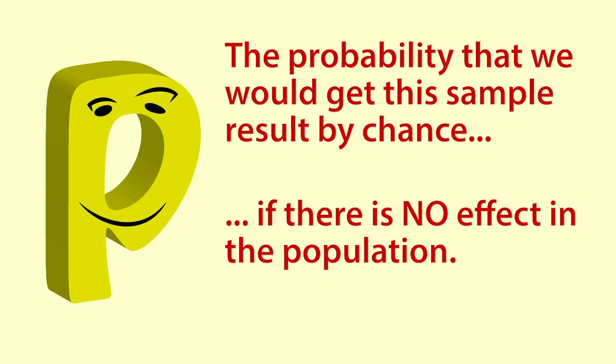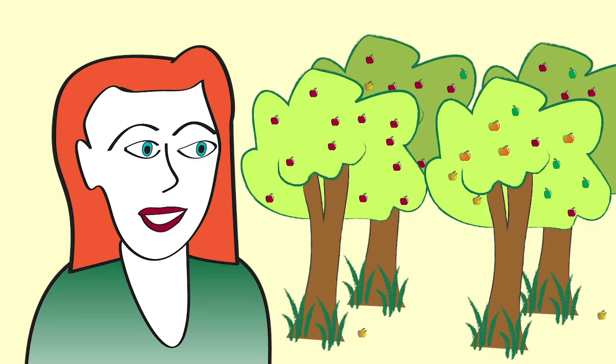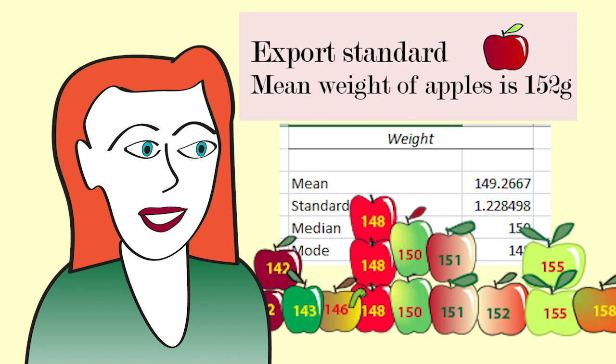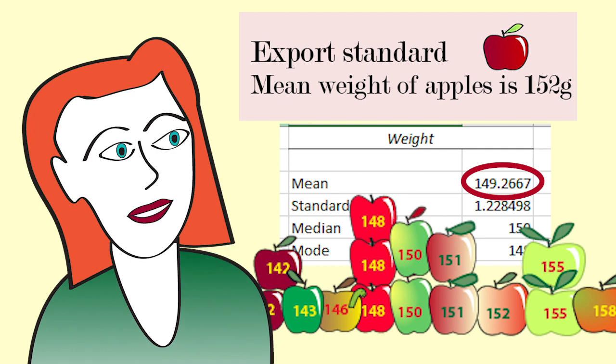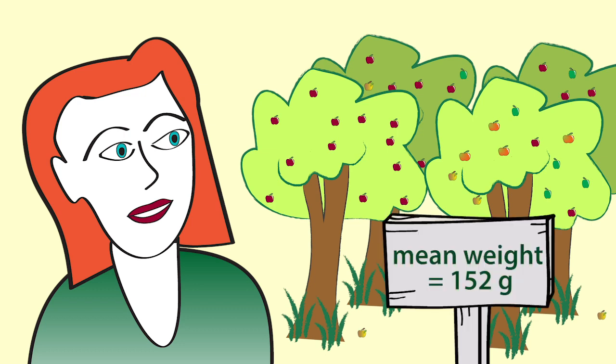We will use a test for a population mean to illustrate this. We will use the same example as is shown in hypothesis test for a mean in Excel. In this case, the orchard owner is comparing the mean weight of her apples with the export standard of 152 grams per apple. The orchard owner can see that the mean weight of the apples in the sample is about 149 grams. Could that just be by chance that the apples in the sample are mostly lighter than the ones in the whole orchard, and in reality the average weight of the apples in the orchard is 152 grams or above?